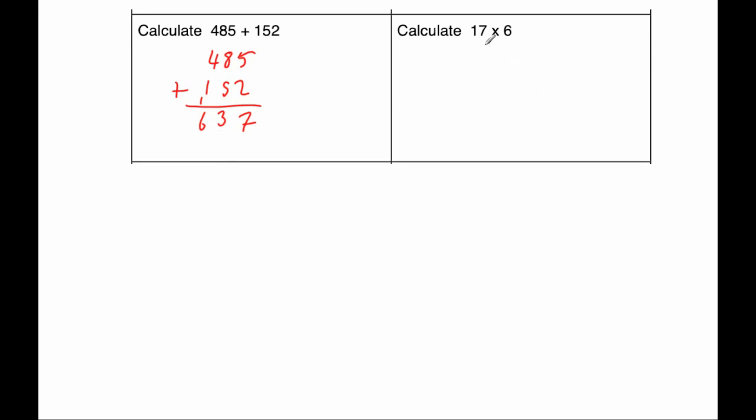And the next question is a multiplication question. So it's 17 multiplied by 6. Again, lining them up. 6 times 7 is 42. So put the 2 down, carry the 4. 6 times 1 is 6. Plus 4 is 10. So the answer would be 102.